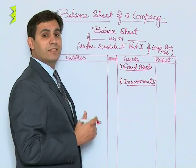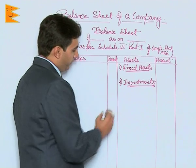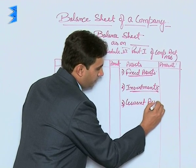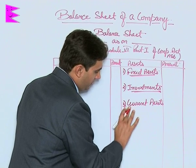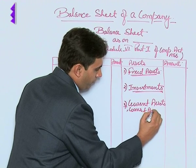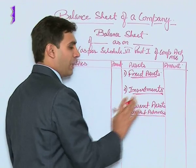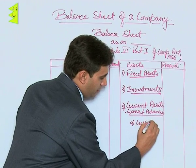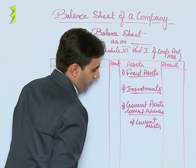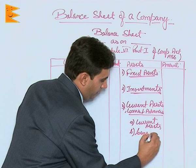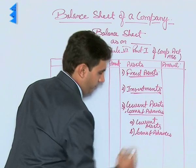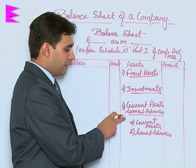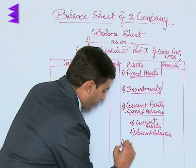Investments means the money that is invested outside the business. Then we have the third major heading: current assets, loans and advances. This is one major heading, but under it we have two subheadings — the first being current assets and the second being loans and advances.